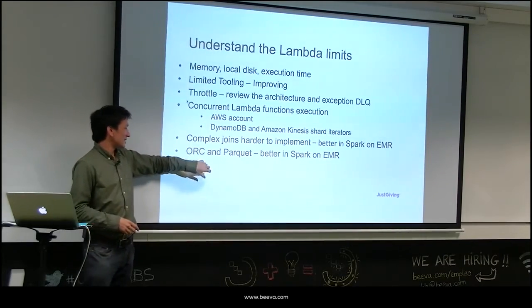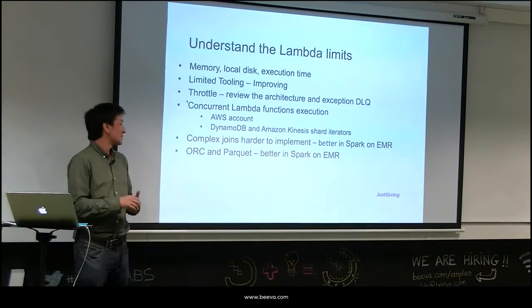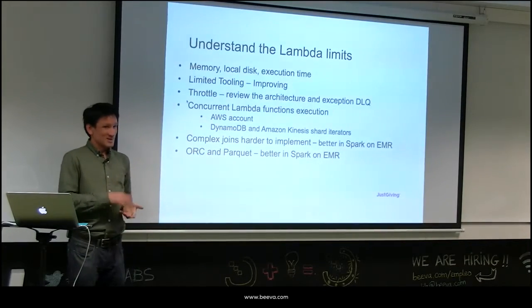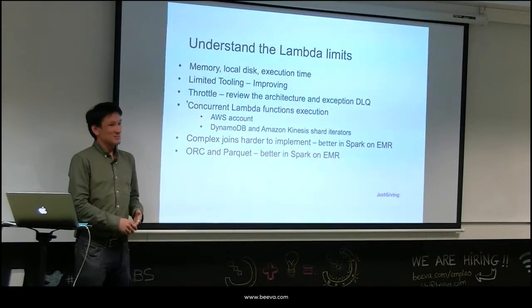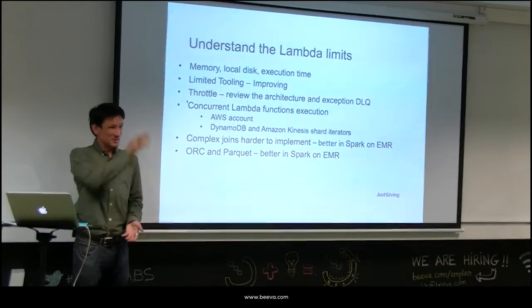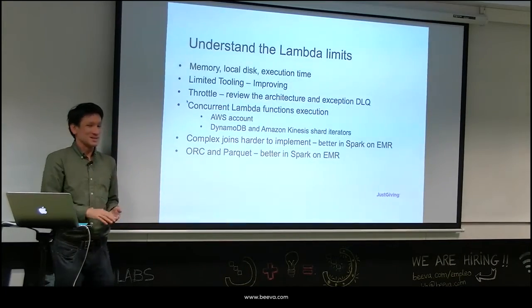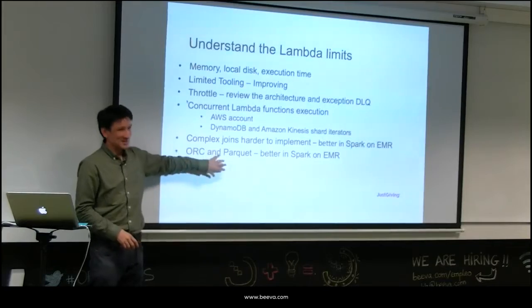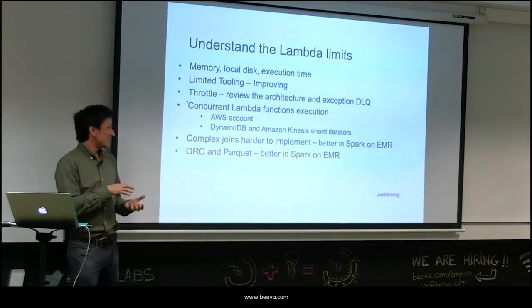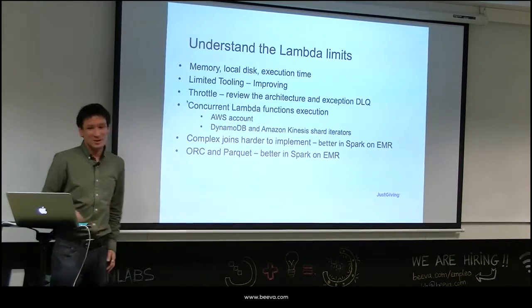ORC and Parquet are big data formats — previously it was sequence files, but in the Spark and Hive world they use ORC and Parquet. This is a way of encoding data rather than having it in JSON or comma-separated format. You encode each column, compress it, and create aggregate statistics where you can jump between different parts of the data. It's a big data file format I recommend. Unfortunately, because you don't have all the data available within Lambda for some patterns, you're not able to aggregate and create ORC files efficiently — that's a better job for Spark on EMR.